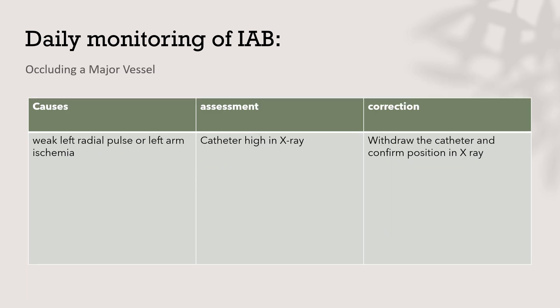The second part of daily monitoring of the intra-aortic balloon pump includes major vessel concerns. This can present as a weak left radial pulse or left arm ischemia, indicating the catheter is positioned too high on X-ray. Withdraw the catheter and confirm the position on X-ray. The intra-aortic balloon pump should be positioned between the second and third intercostal space — not too high to occlude the left subclavian artery, and not too low to occlude the left renal artery.